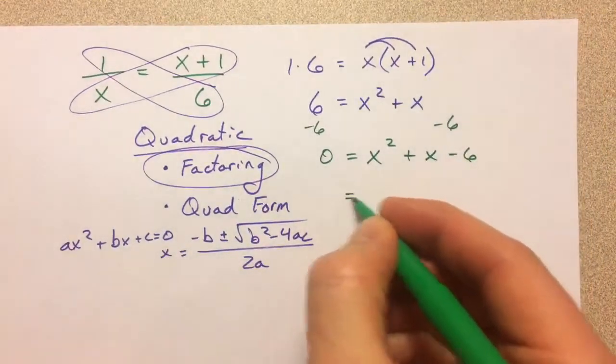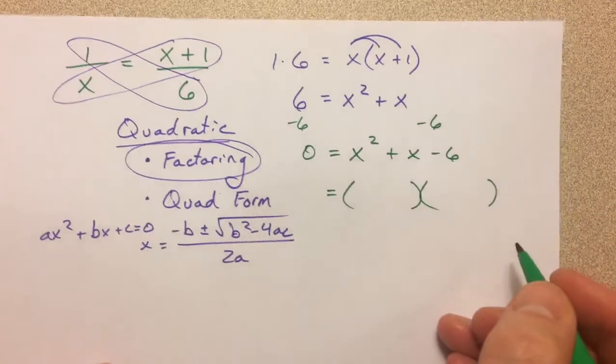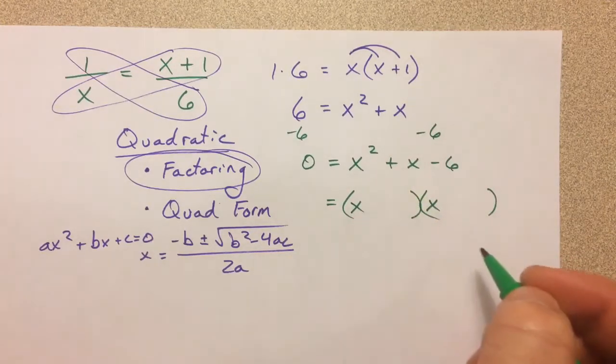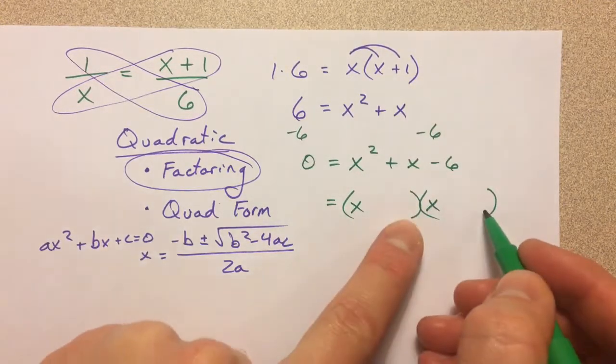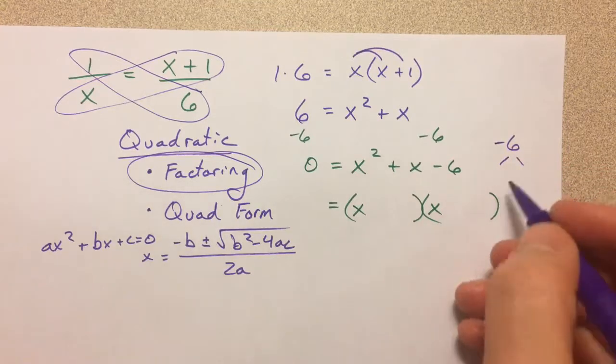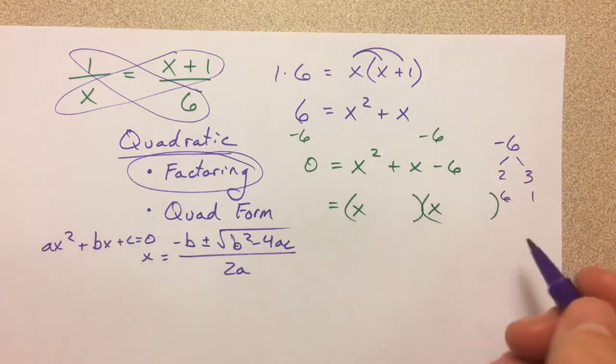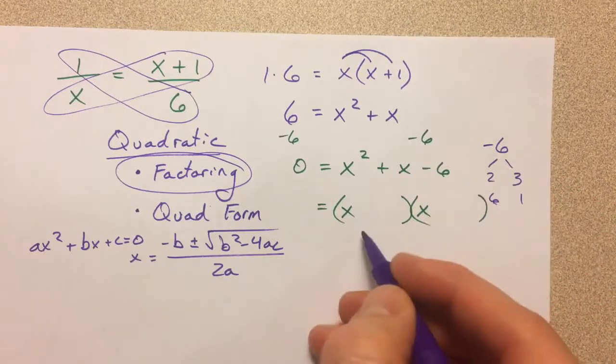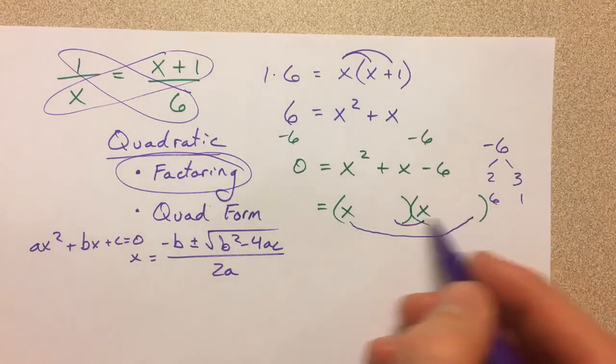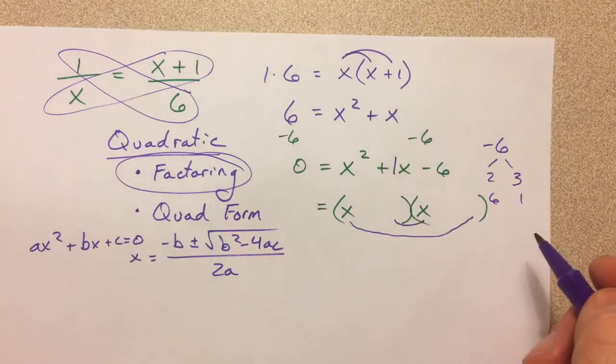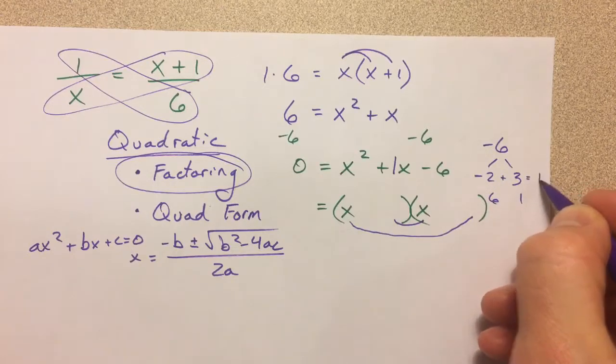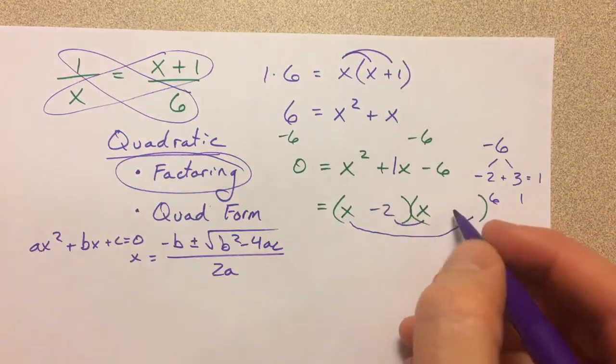And then the idea behind factoring is I want to change this back into a multiplied version. And so x times x will get me x squared. But now I want to think of the two numbers here that will multiply to negative 6. I could have 2 and 3, I could have 6 and 1. But I want to get a negative, and then when I multiply out in this outside term and the inside term, if you think FOIL, those two terms have to add to positive 1x. So I want a positive 3 and a negative 2, because when they add together, they will get me positive 1. So I'm going to say minus 2 plus 3.